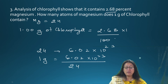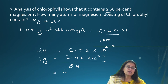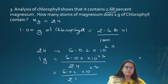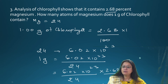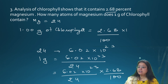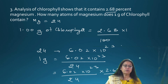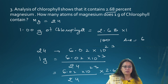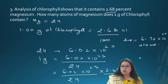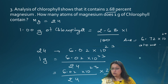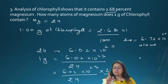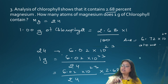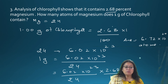So the number of Mg atoms in 1 gram of chlorophyll equals (6.02 × 10²³ / 24) × (2.68 / 100). When you calculate this, the answer comes to 6.72 × 10²⁰ atoms. To recap: 2.68% of 1 gram is the magnesium present; divide by its molar mass 24 and multiply by Avogadro's number to get atoms.